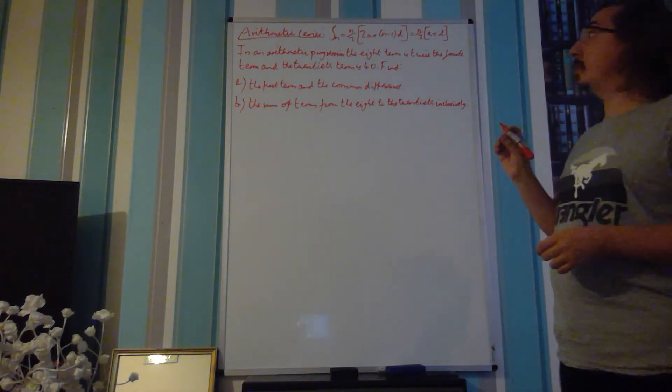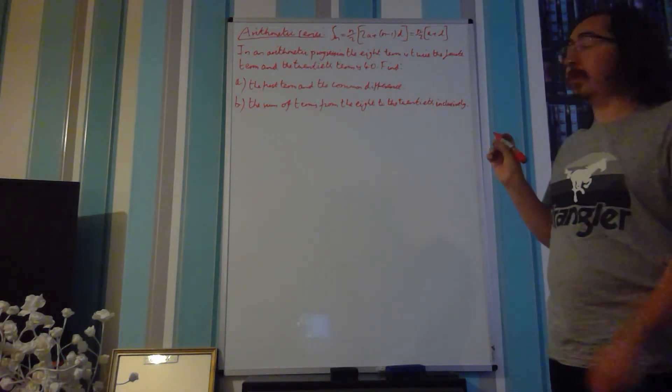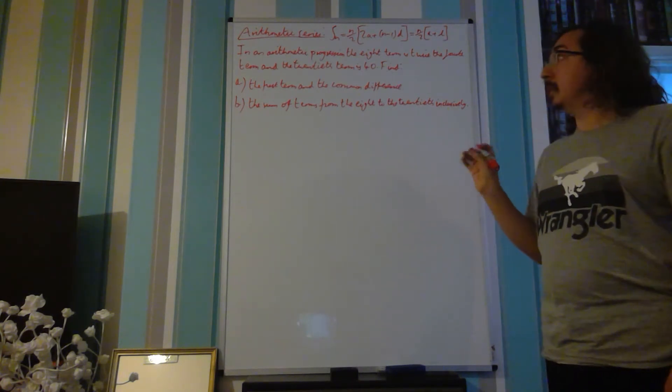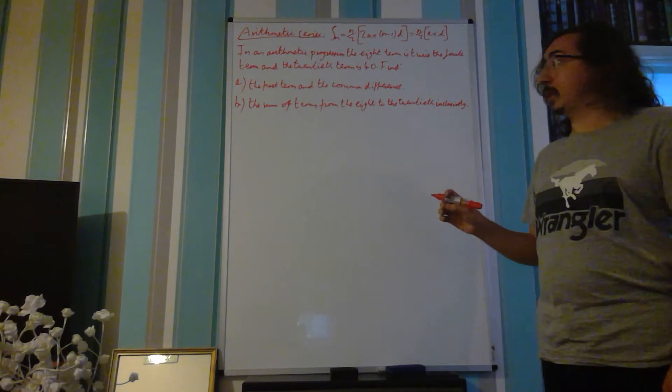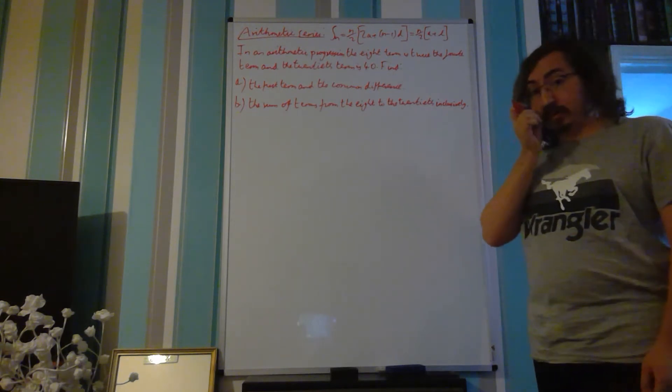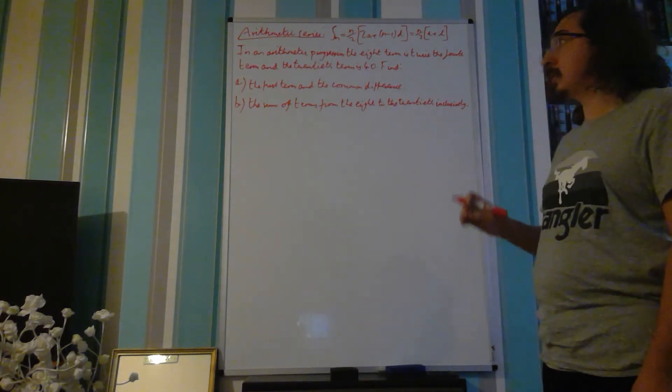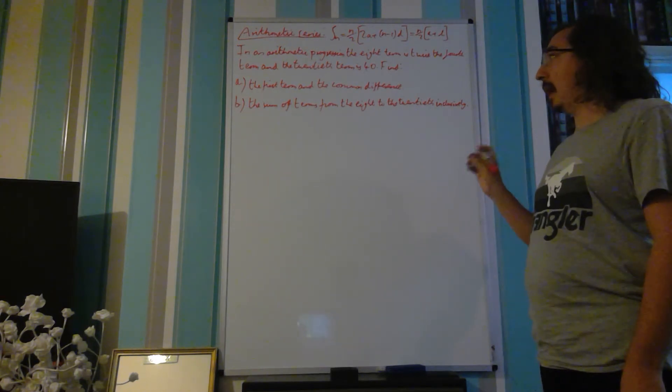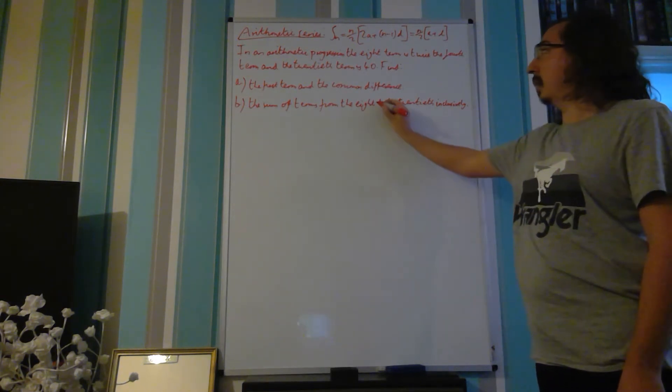In this problem we're given an arithmetic progression and we're told that the 8th term is twice the 4th term and the 20th term is 40. We want to find first, the first term and the common difference, and then for part B we want to find the sum of terms from the 8th to the 20th inclusively.